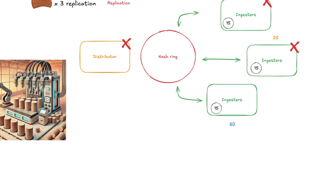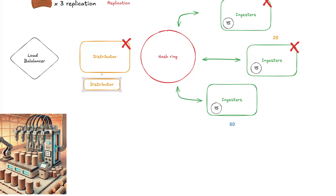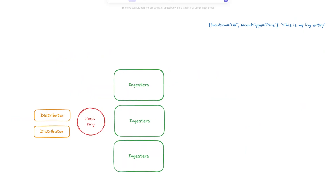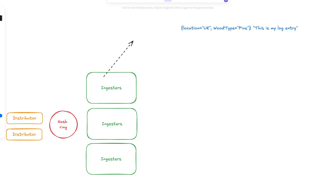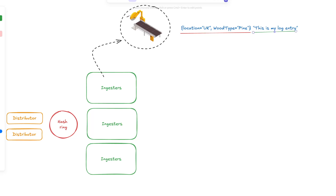A load balancer is necessary to properly balance incoming traffic to each distributor. In a Kubernetes deployment, this is managed by the Kubernetes service load balancer. Distributors are stateless components, making it easy for them to scale and offload as much as possible from ingesters. After quality control, our logs arrive at the ingesters, one of the most critical components of our Loki architecture. Imagine an ingester like a production line of debarking and sawing machines — they remove the bark and cut the logs into manageable pieces, preparing them for further processing and storage. Essentially, we remove the metadata from the log payload and create our index and chunks.